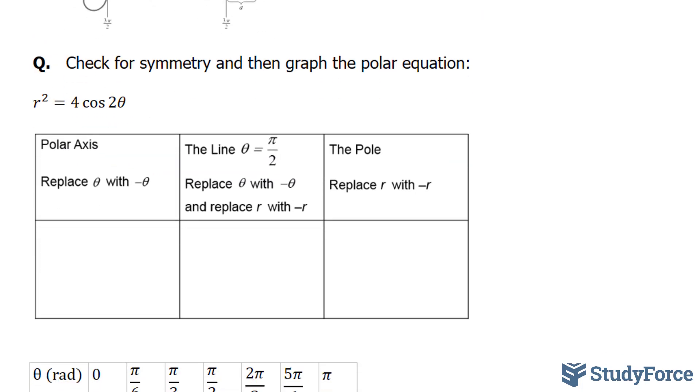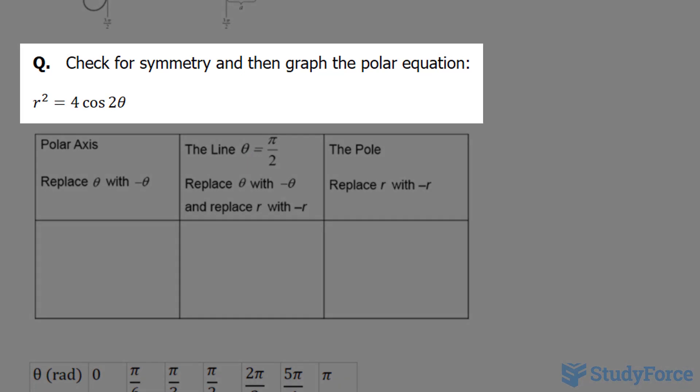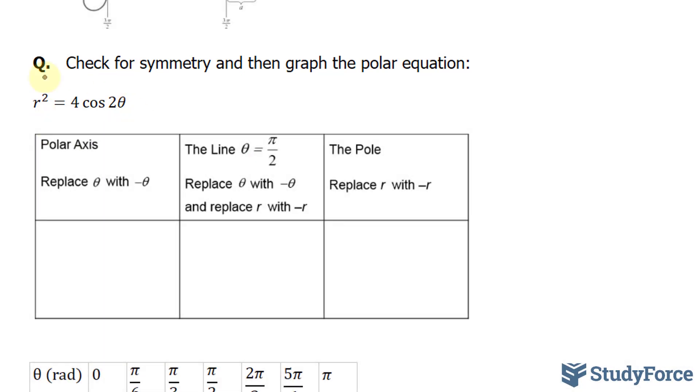That being said, the question reads: check for symmetry and then graph the polar equation. As I mentioned, for any lemniscate type of equation such as this one, the test will pass for each of these. However, I want to prove it to you.